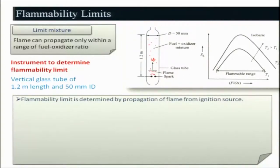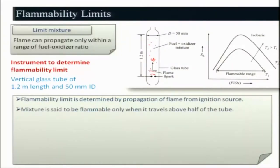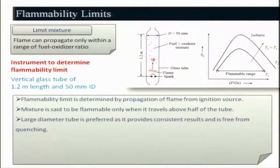The ignition source must provide enough energy — if you are not giving enough energy and it does not ignite, you cannot call it a flammability limit. The flame has to be established fully, and then it may not propagate. A mixture is said to be flammable only when the flame travels half the tube length, i.e., at least 0.6 meters. There are other apparatus such as a combustion chamber used nowadays, but this vertical tube is the standard used throughout the globe. The larger diameter tube is preferred as it provides consistent results free from quenching effects.